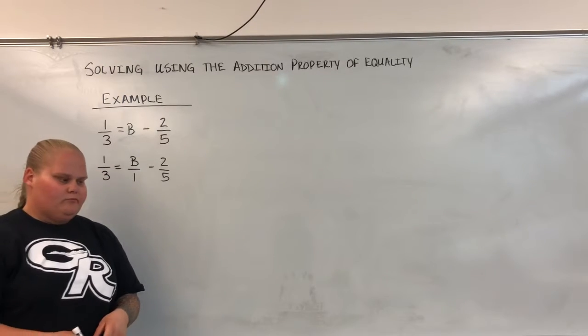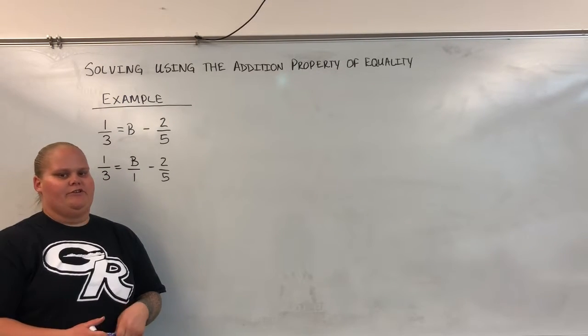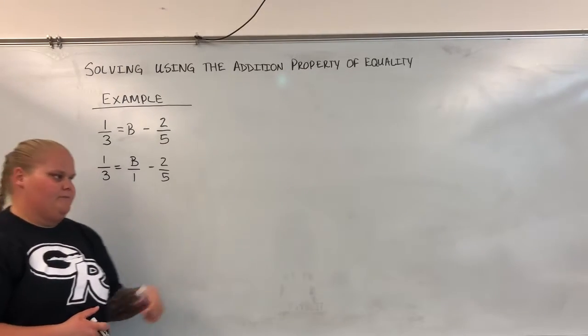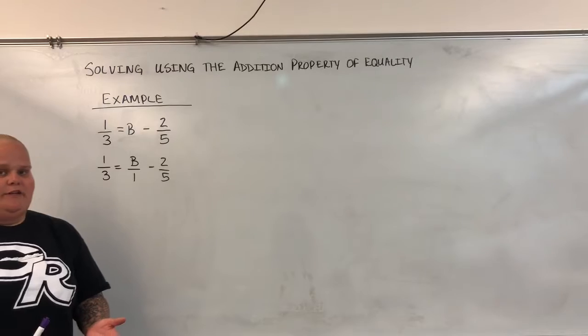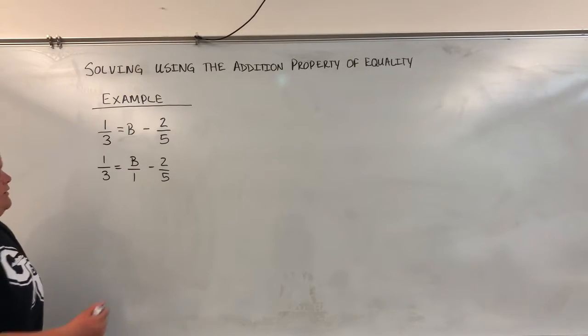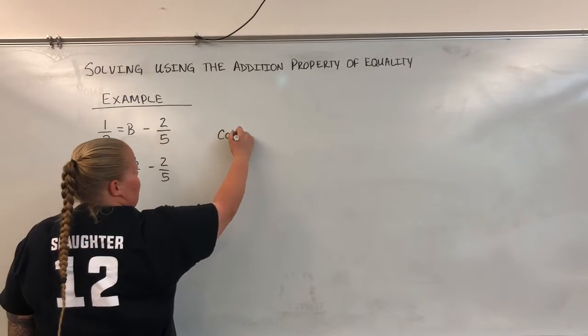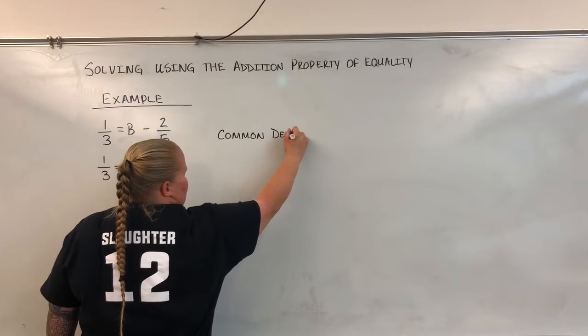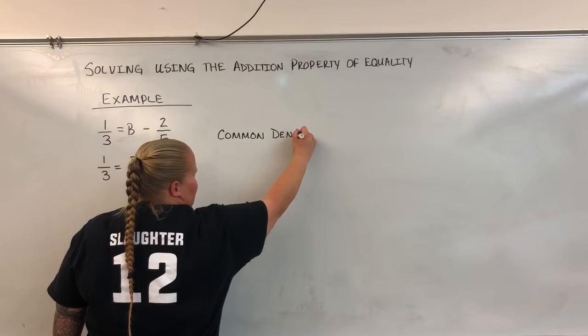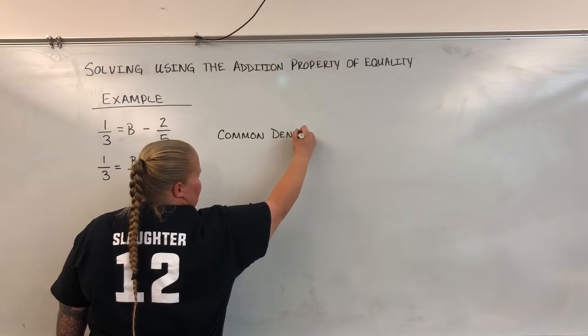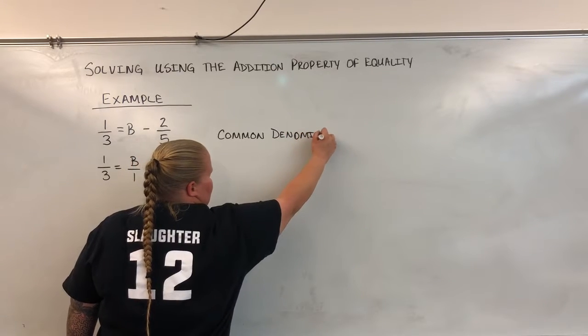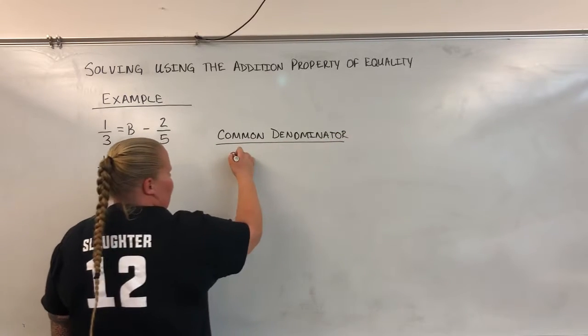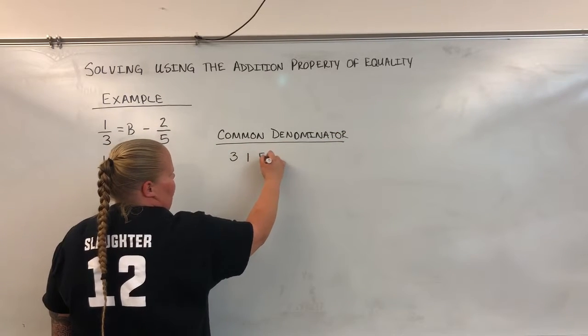Now what we're going to try and do is find a common denominator so that we can start to cancel out some of these fractions. A common denominator for us, how do we figure that out? What we're going to do is take all of the denominators that we have. We're going to write them down. So right now I have 3, 1, and 5.